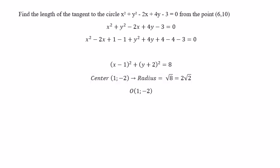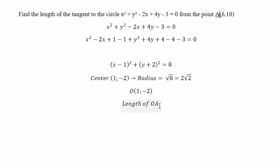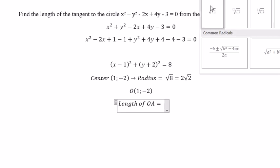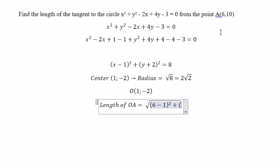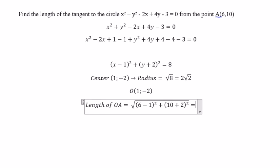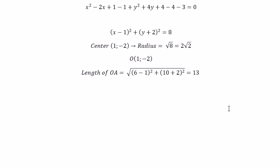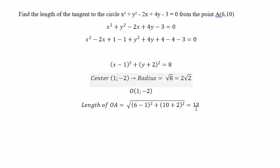Next, we need to find the length OA, where I call the outside point A. That is the square root of (6 minus 1) squared plus (10 minus negative 2) squared, which gives the square root of 25 plus 144, equal to the square root of 169, which is 13.